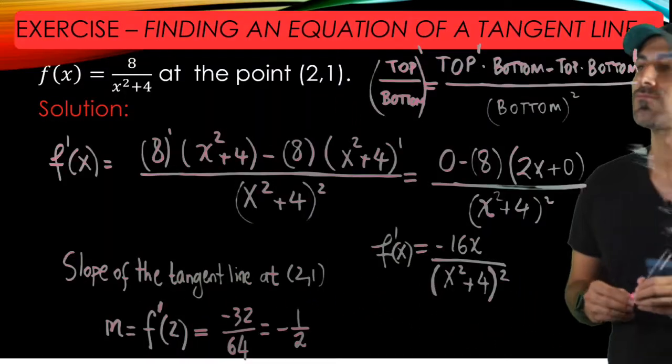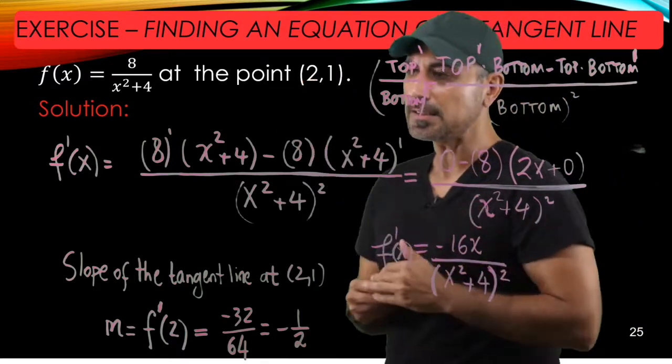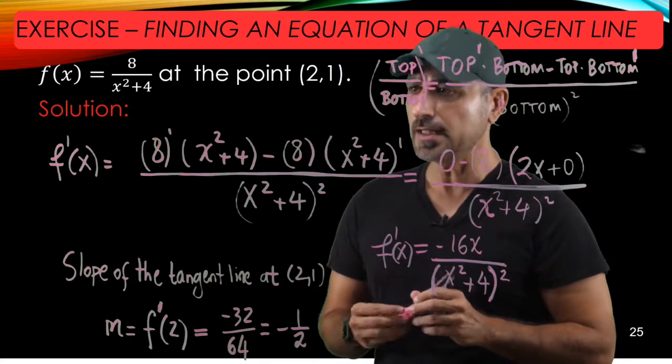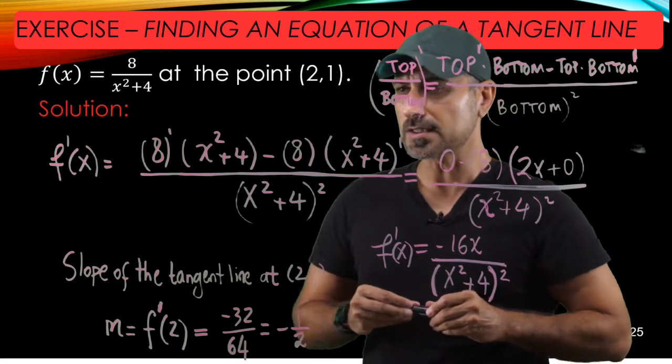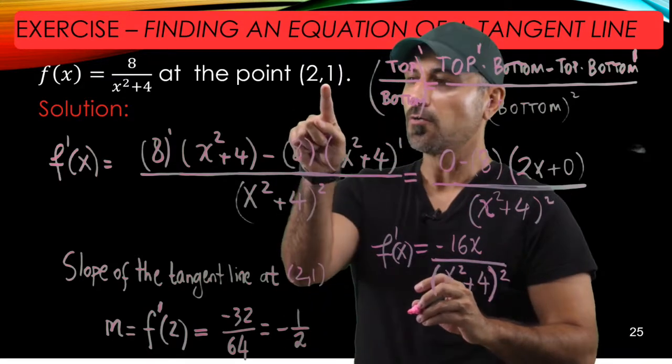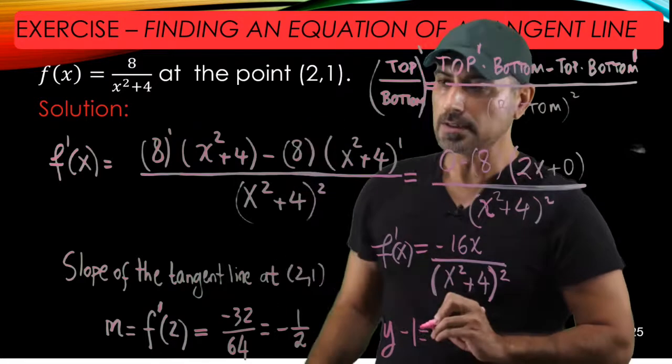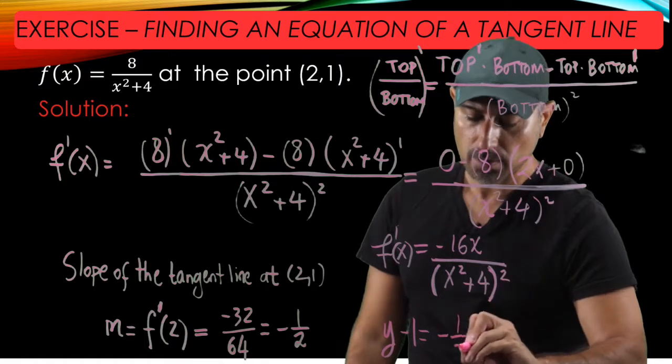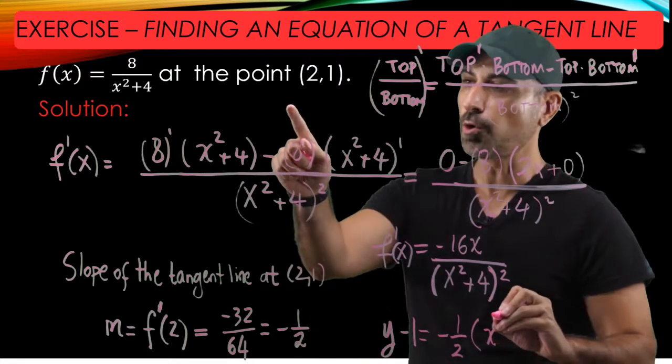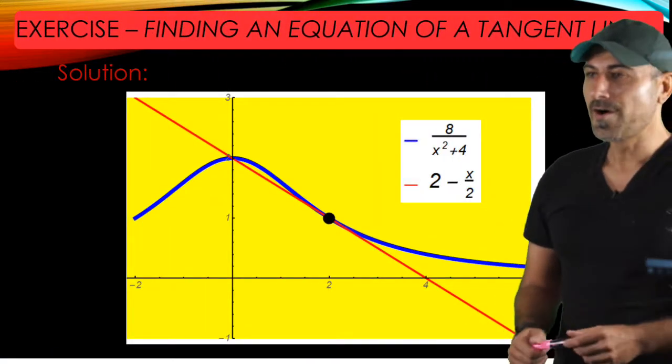Now we have the point that the tangent line passes through and we have the slope -1/2. We can write down the equation of the tangent line with the slope-point form of the line. In other words, y minus the y-coordinate of the point, which is 1, equals the slope times x minus the x-coordinate of the point, which is 2.